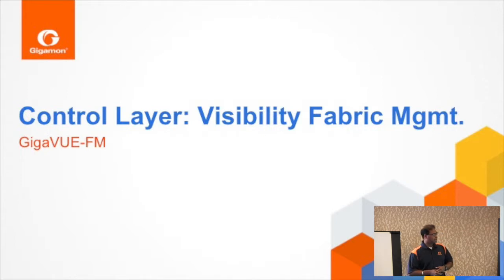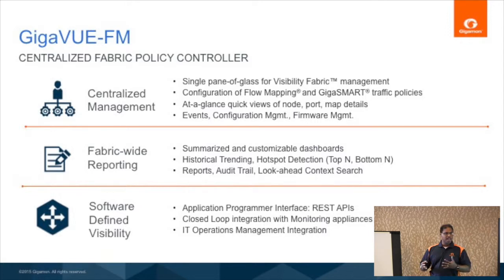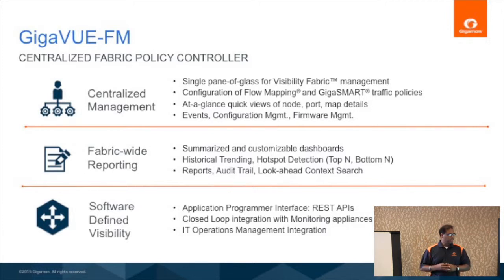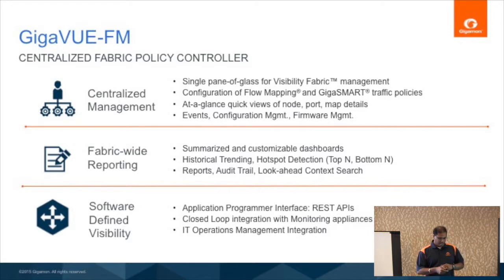Let's double-click on the control layer, which is the GigaVUE Fabric Manager itself — the core that manages the visibility fabric. It's a centralized fabric policy controller, a single pane of glass for all management, configures traffic policies, sets up highly intelligent GigaSmart functions, provides at-a-glance views, fabric-wide reporting, UI functions for network management operators, and audit trails for compliance. And finally, this is the foundation for software-defined visibility — it allows you to program the visibility fabric through APIs, for either IT operators, IT operations management, or closed-loop monitoring with monitoring appliances.